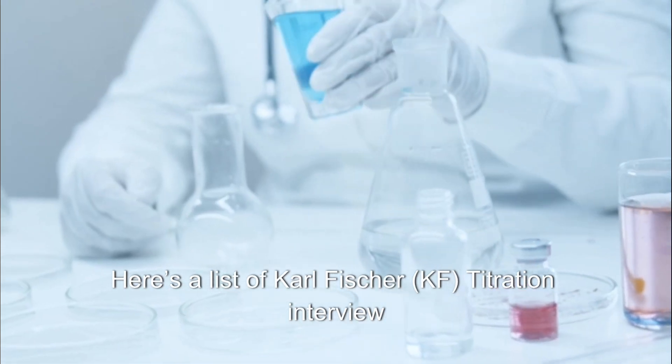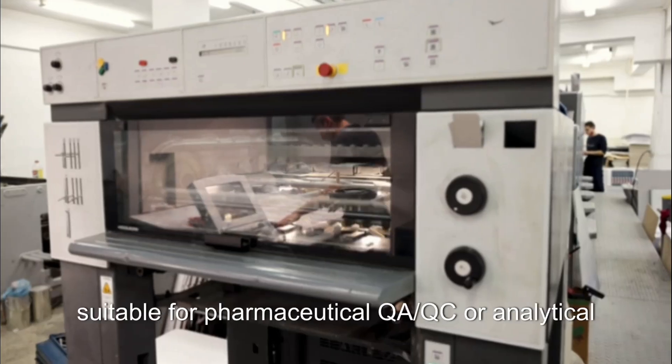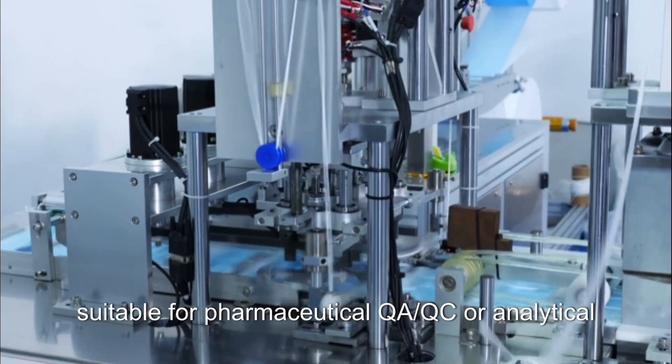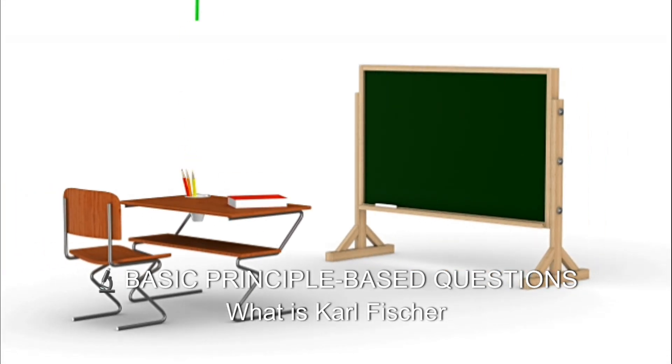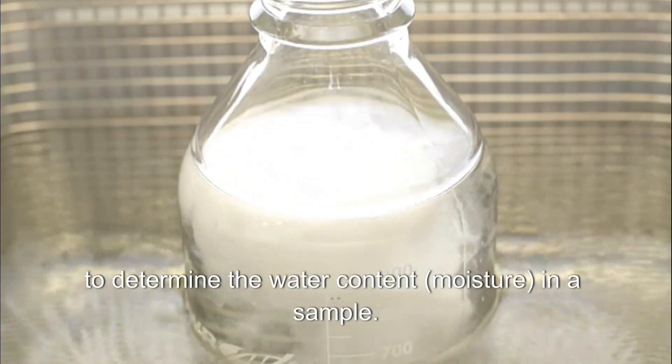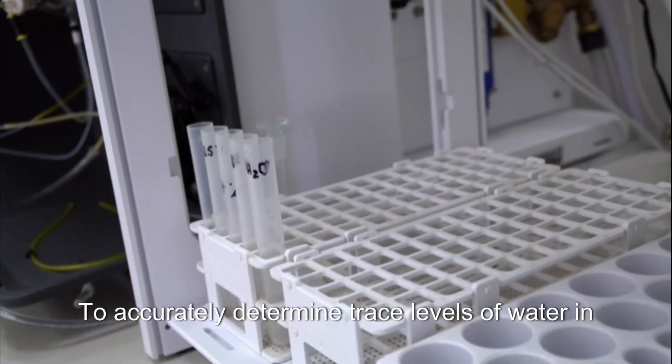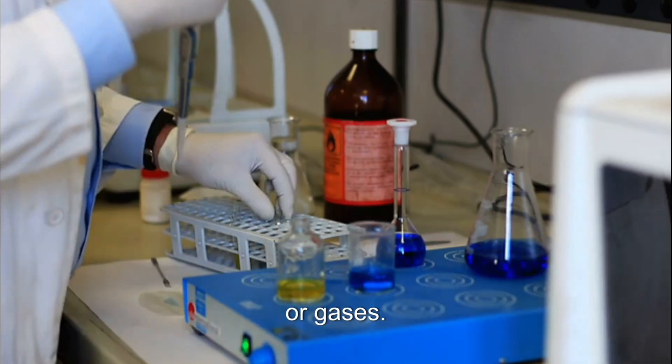Here's a list of Carl Fischer KF titration interview questions with detailed answers suitable for pharmaceutical QA, QC, or analytical chemistry roles. What is Carl Fischer titration? It is a quantitative chemical analysis method used to determine the water content in a sample. Why is KF titration used? To accurately determine trace levels of water in solids, liquids, or gases.